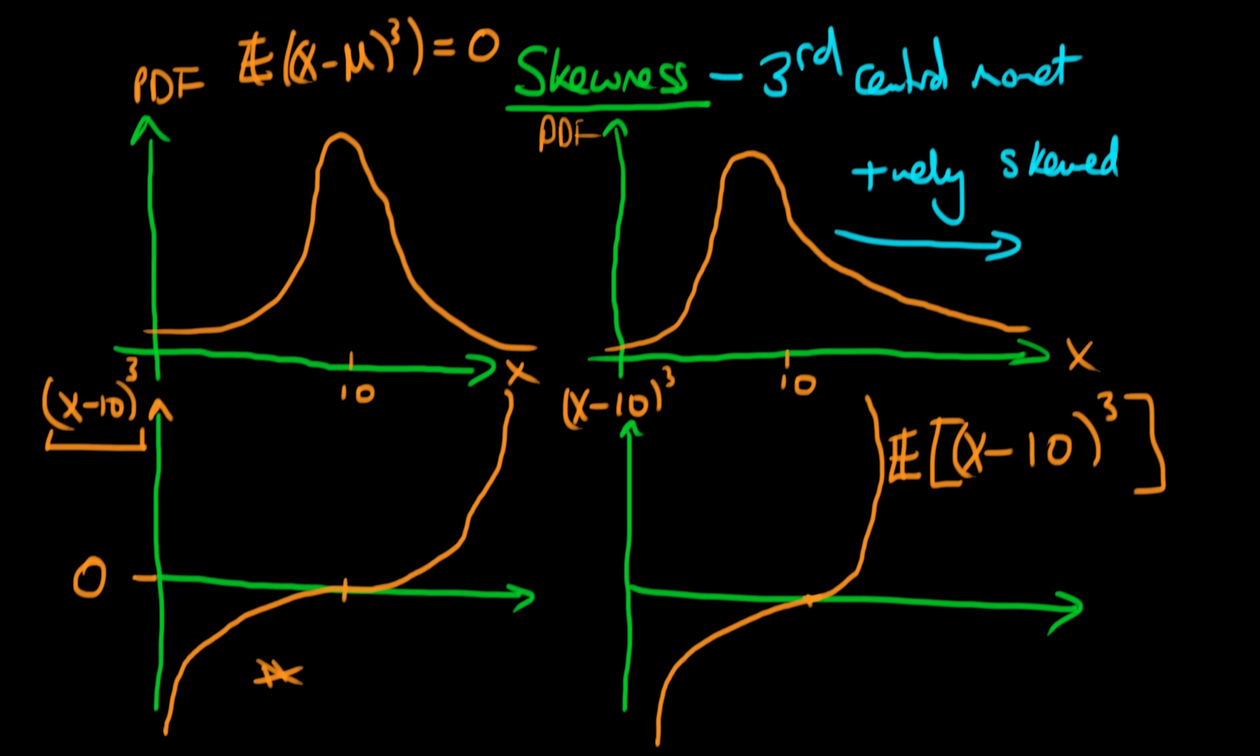So it's going to go up much more quickly than on the left. Because of that, E[(X-μ)³] might be something positive, like a value of 2.